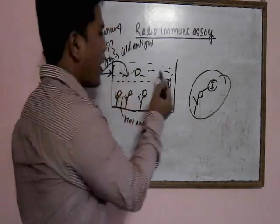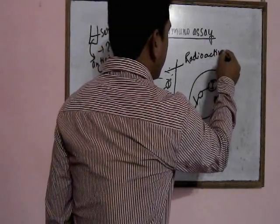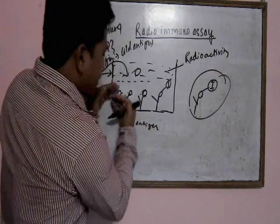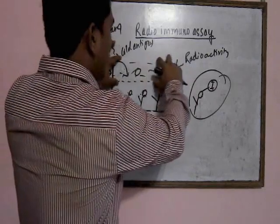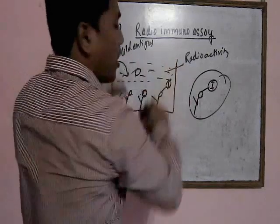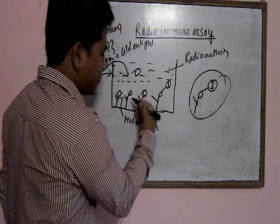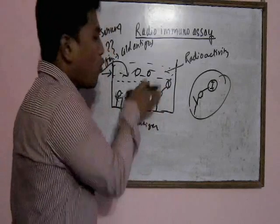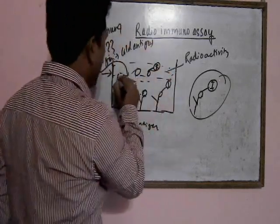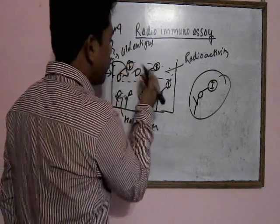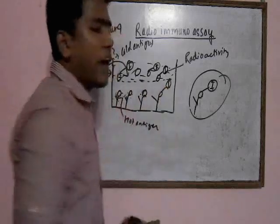At first there was no radioactivity in the surface or upper part of the microtiter plate — radioactivity was only in the bottom part. But now, as the hot antigen is displaced upward to the surface, the radioactivity at the surface increases. So the radioactivity in the surface is now increased.